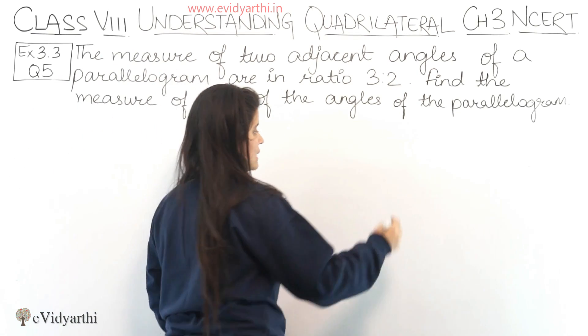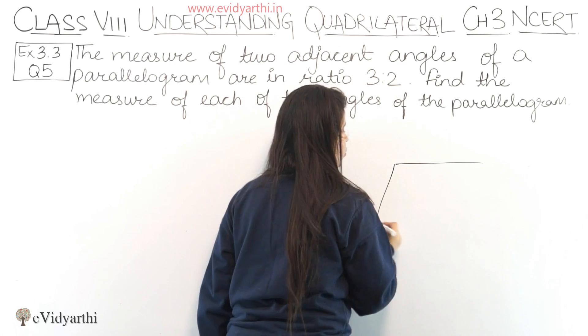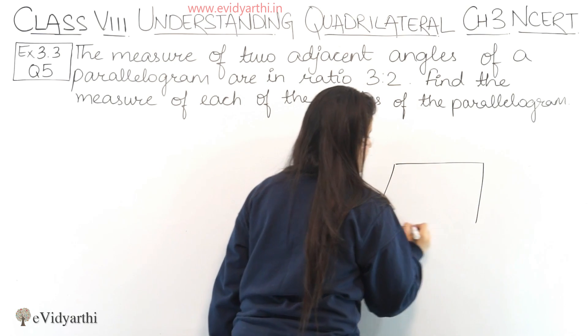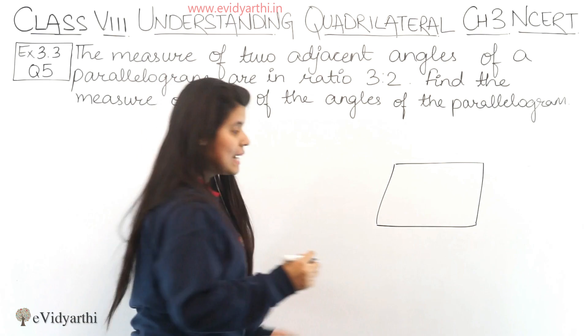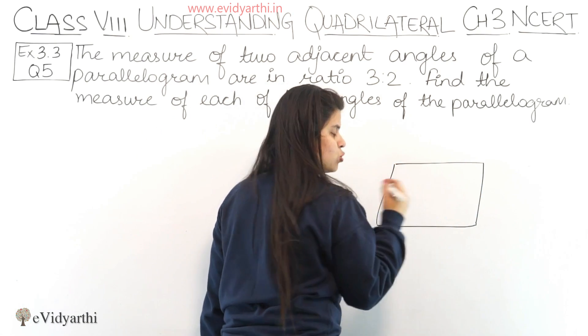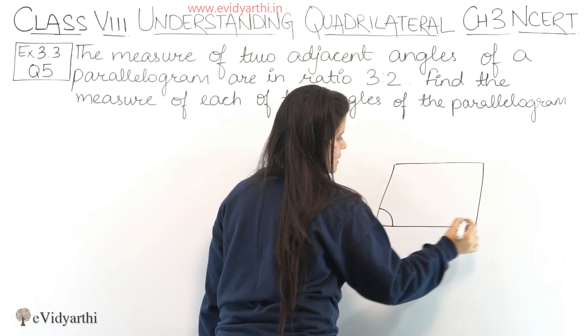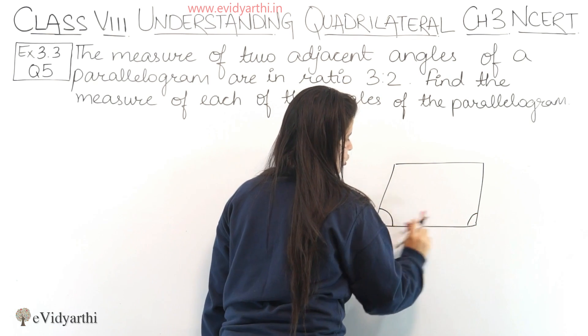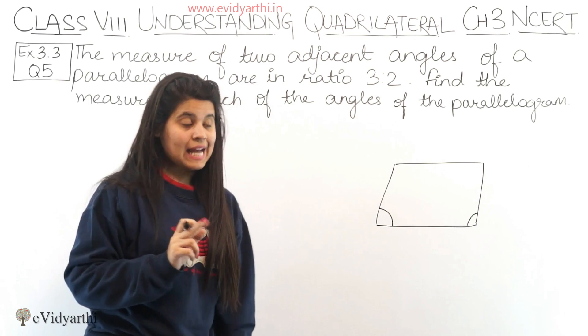Let's take the angles of the parallelogram. If we have a parallelogram, we have the adjacent angles given. Adjacent angles, it can be this and this, this and this, or this and this. Let's take this angle and this angle - these two angles are adjacent angles.